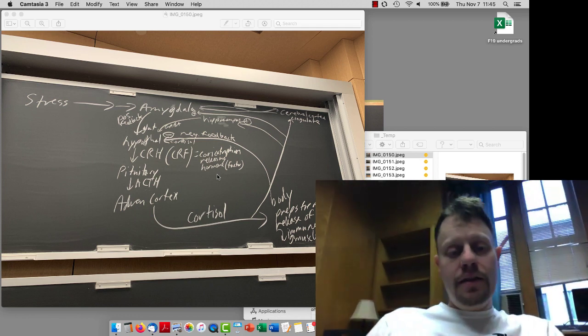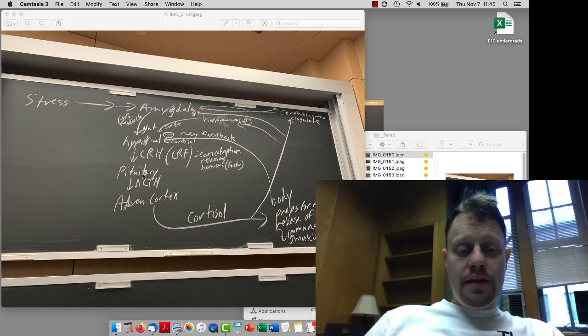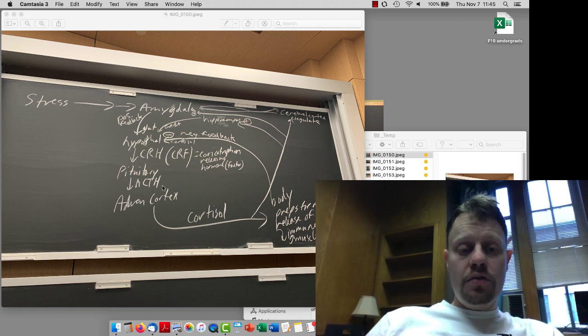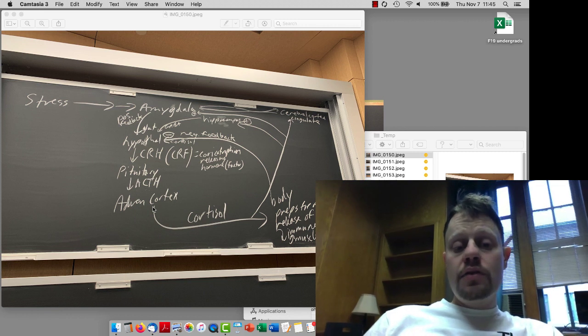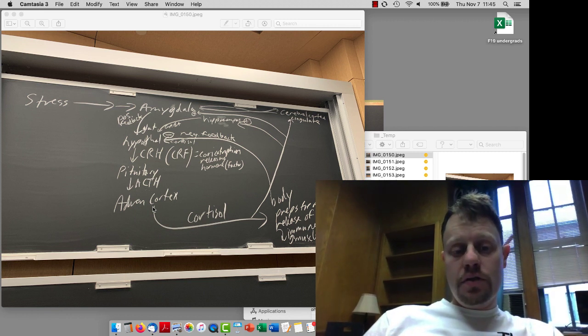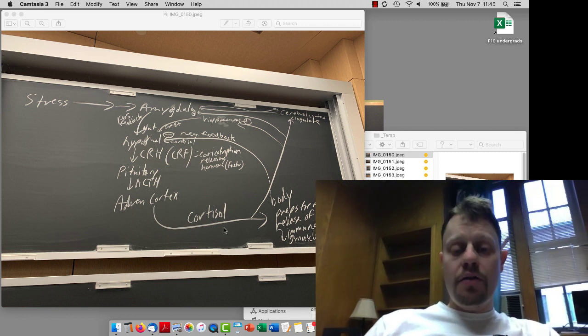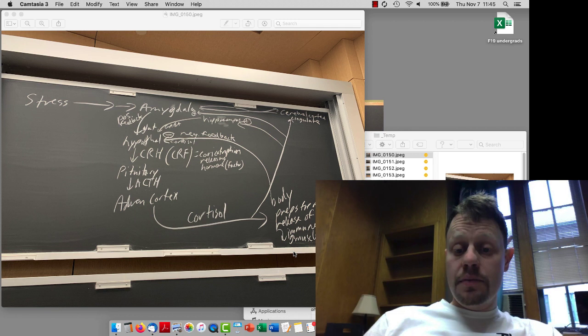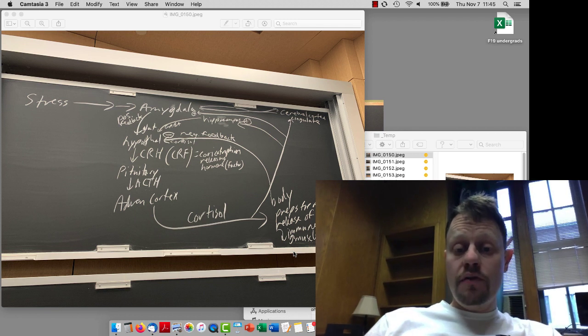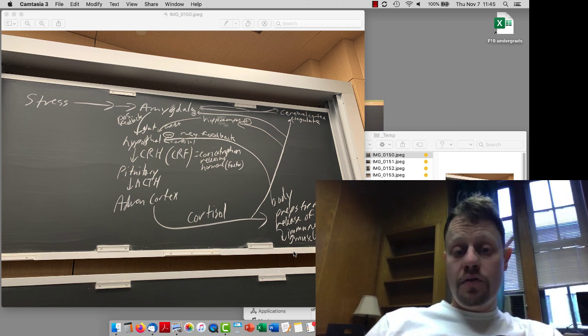And that then activates the anterior pituitary to release ACTH, adrenocorticotropic hormone, that travels throughout the body but only binds to the adrenal cortex, where then cortisol is released out throughout the whole body. Yet cortisol in the body causes release of glucose, increased muscle excitability, and decreased immune function, and a few other things to prepare the body for action.